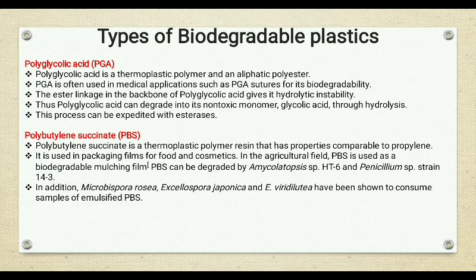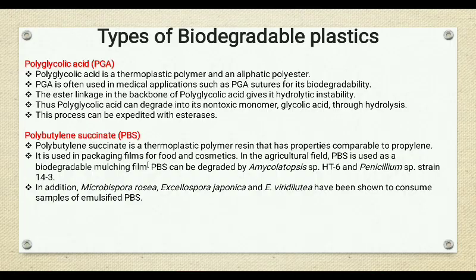The first biodegradable petroleum-based plastic is polyglycolic acid, generally called PGA. It is a thermoplastic material used in medical applications and is biodegradable. The second is polybutylene succinate, called PBS. It is also a thermoplastic material with properties similar to polypropylene and is used in packaging for foods, cosmetics, and so on.